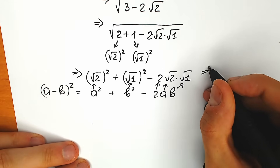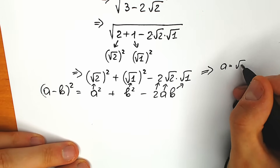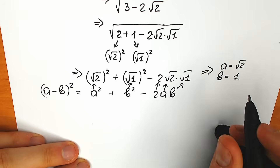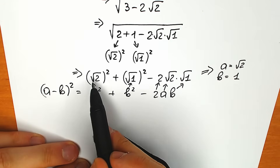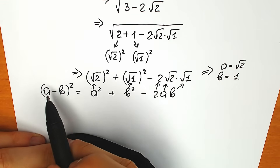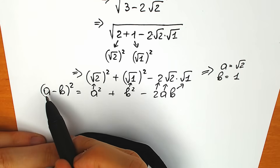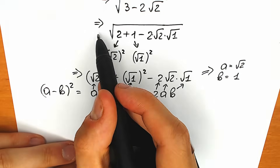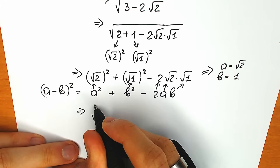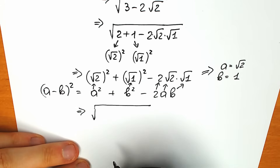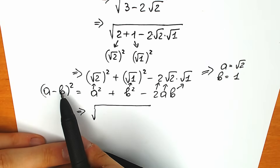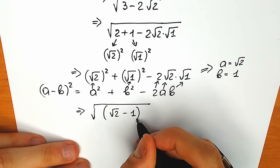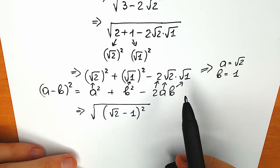From here we can write that a equals square root of 2 and b equals 1. According to the formula, we can express the entire thing as a minus b to the second power — but don't forget about the outer square root. So continuing, we have square root of square root of 2 minus 1, the whole thing to the second power.